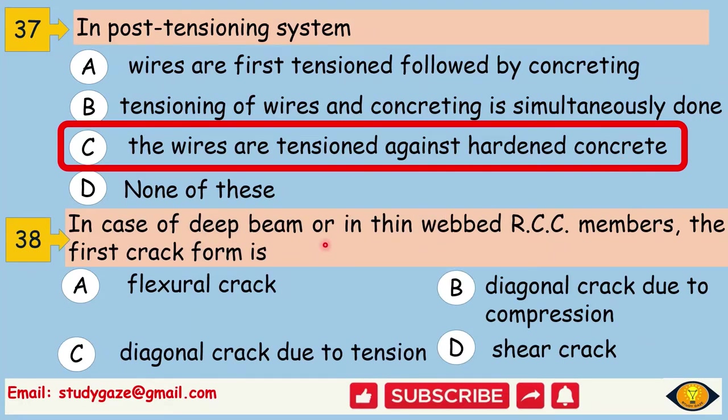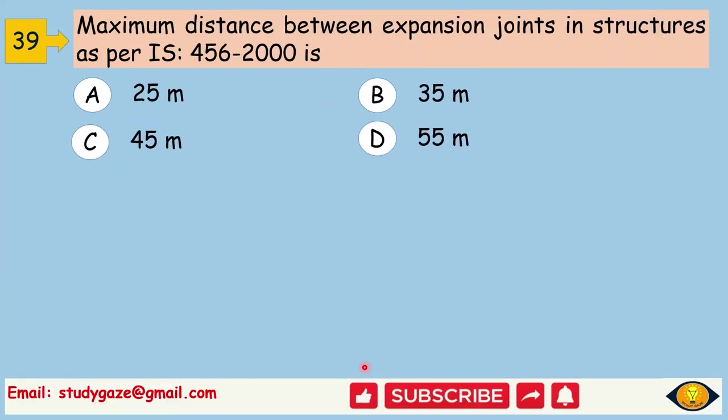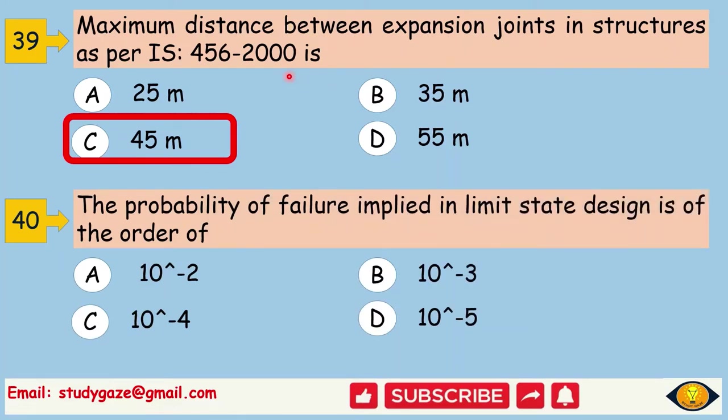In case of deep beam or in thin waved RCC member, the first crack form is. Answer is diagonal crack due to tension. Maximum distance between expansion joints in structures as per IS 456-2000 is. The probability of failure implied in limit state design is of the order of. The answer is 10 to the power minus 3.